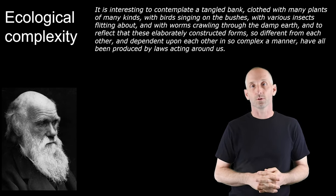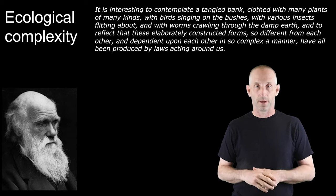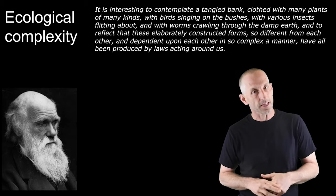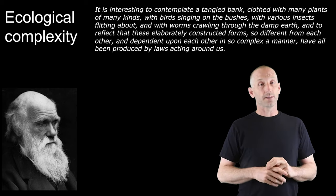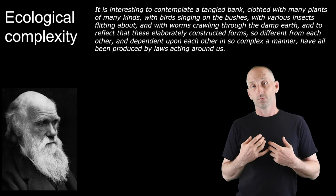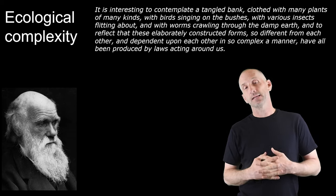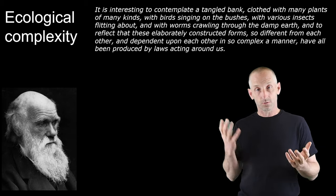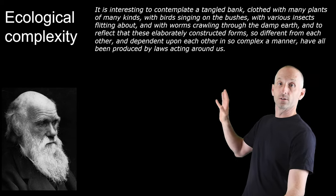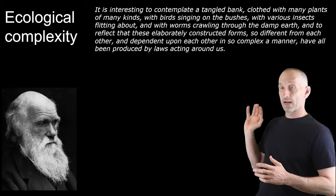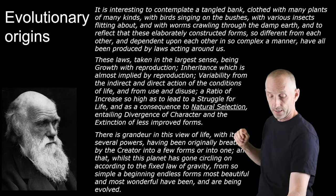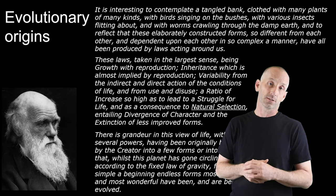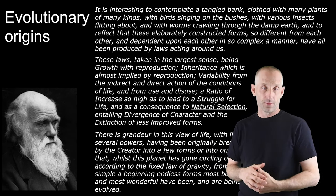In the last lecture in this course, we focused on ecological complexity and tried to explore a number of the branches or flavors of ecology used to understand that complexity. This lecture is about how that complexity came to be — in essence, the evolution of the diversity of life. That evolution is Charles Darwin's insight, and we are converting, using the closing passages of the Origin of Species, from the idea of a tangled bank of ecological complexity to the realization that this has all evolved from a single common ancestor through natural selection and other evolutionary processes.